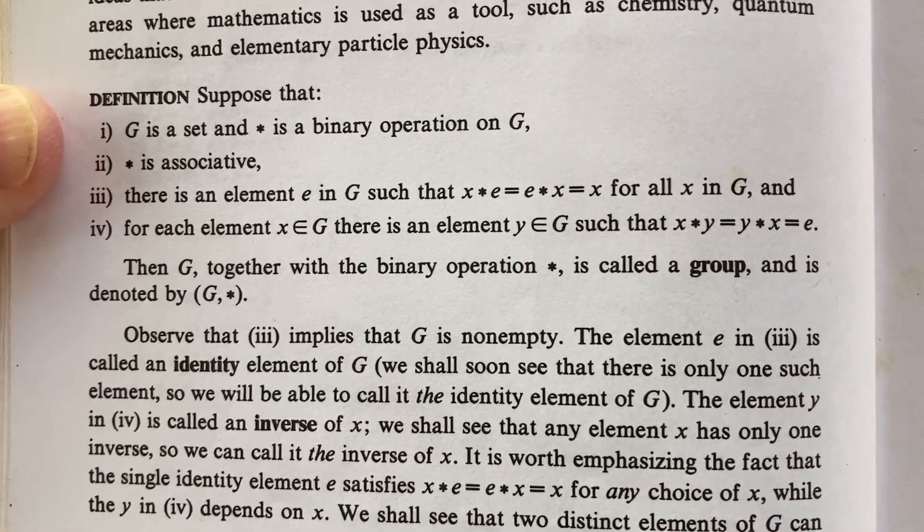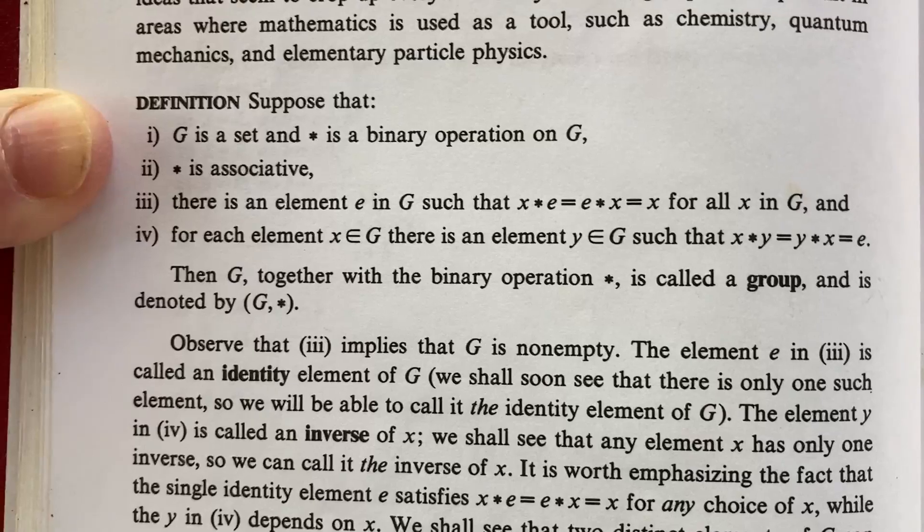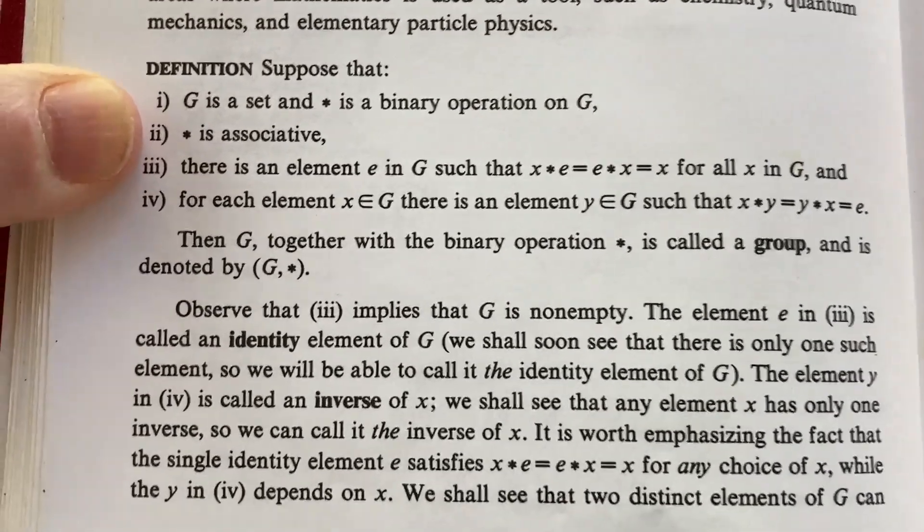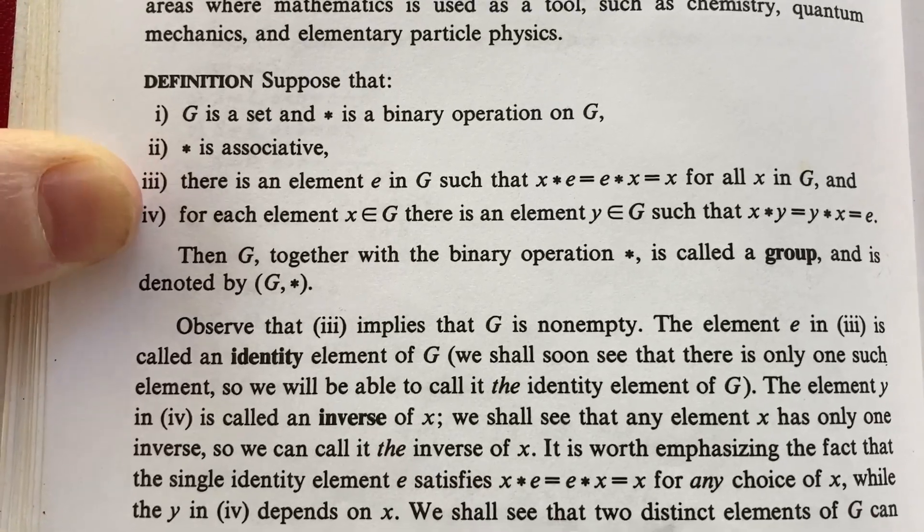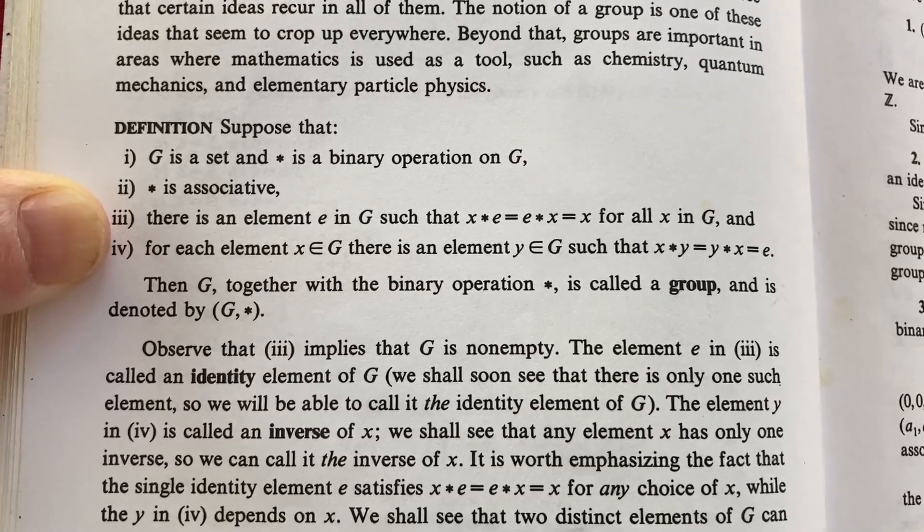Then it talks about inverses. For each element x in G there is a y in G such that xy is yx which is equal to e. So basically a group is a set with a binary operation. The operation is associative. There's an identity element in the set, and every element has an inverse. If you have all of those conditions you have what's called a group.